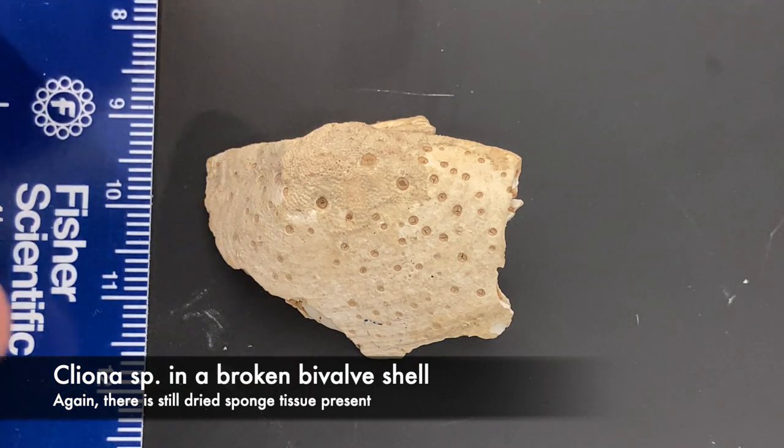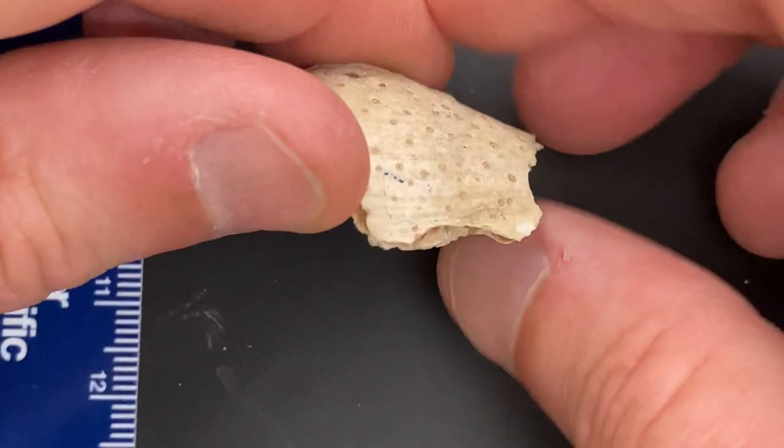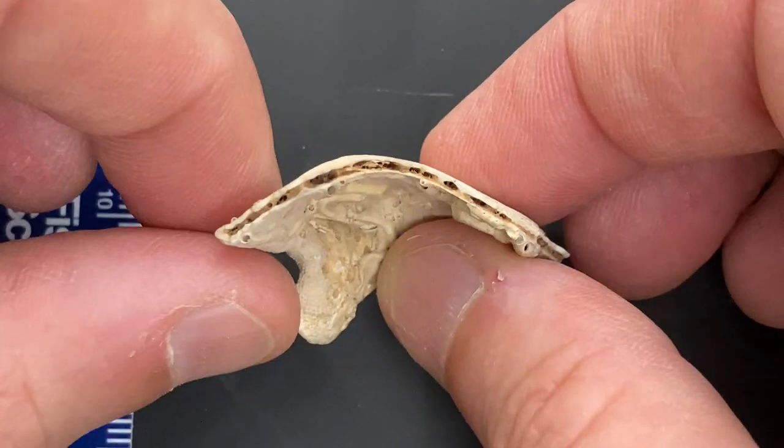In this specimen, the shell is broken, so when you turn it on its side, you can see the extent of the sponge damage to the shell.